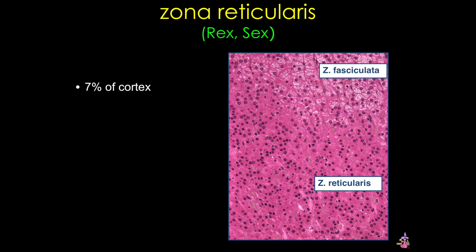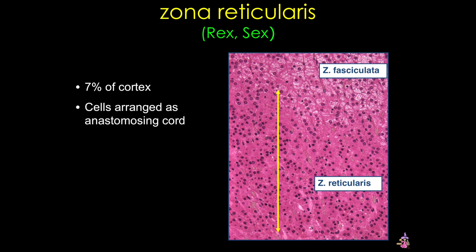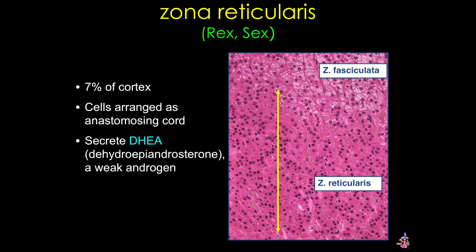The final zone of the cortex is the zona reticularis, also known as 'Rex Sex.' This narrow zone is characterized by darker staining eosinophilic cells arranged in anastomosing cords. The zona reticularis secretes dihydroepiandrosterone (DHEA), an androgen.